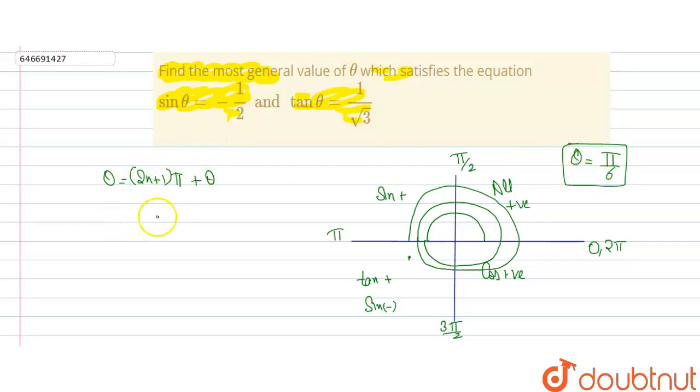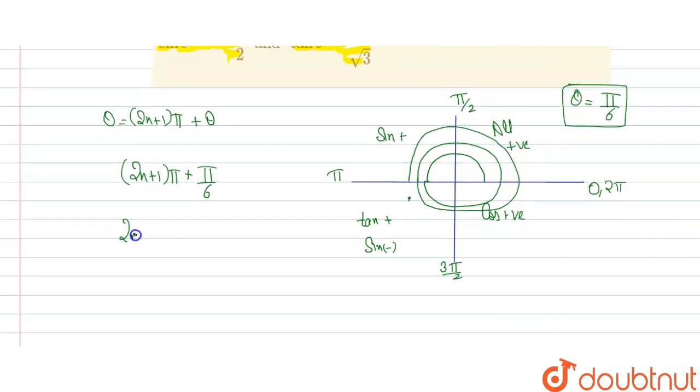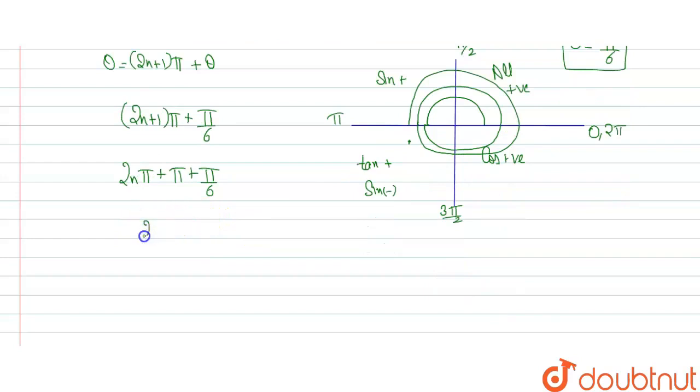So we can say that our general value of theta will become (2n + 1)π + π/6. Now we solve it further. We'll get 2nπ + π + π/6. Now further solving will get 2nπ + 7π/6. As in this option, we have to find the most general value of theta, so this is the most general value of theta.